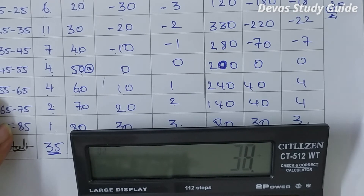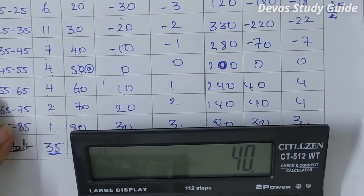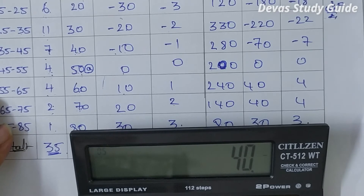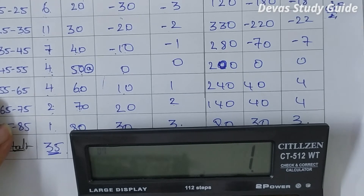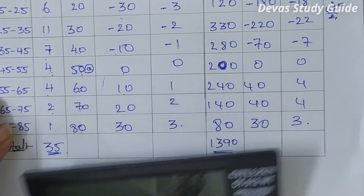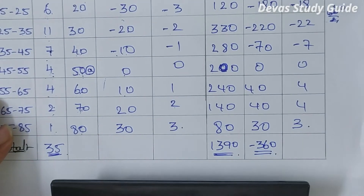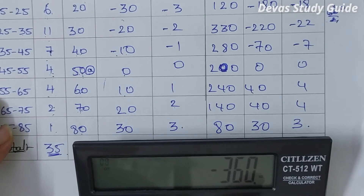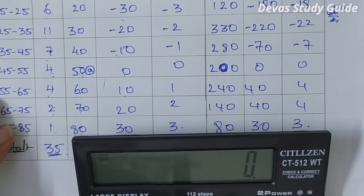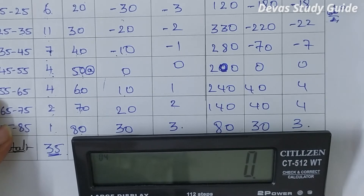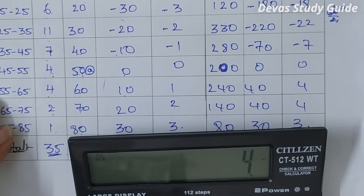Sigma fi·di: 30 plus 40 plus 40 plus 0 minus 70 minus 220 minus 180 equals minus 360. Sigma fi·ui: 3 plus 4 plus 0 minus 7 minus 22 minus 18 equals minus 36.